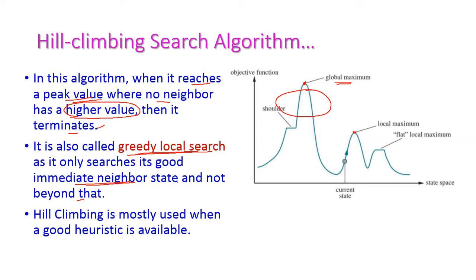For example, this is the current state. The neighboring state it finds only needs to be greater than this particular current state. Hence this is called a greedy local search algorithm. The hill climbing algorithm is mostly used when a good heuristic is available, because hill climbing is highly dependent on the heuristic value.